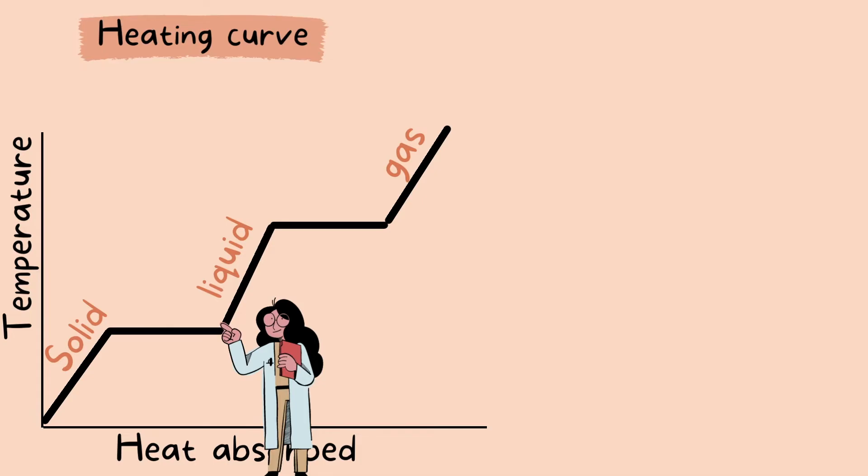Here we have the first phase change that turns solid to liquid, which is melting. During the phase change, you can see that the molecules are absorbing more heat and the temperature is rising. This causes the molecules to spread apart from each other and move freely.